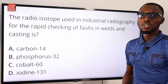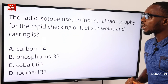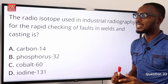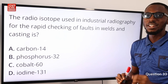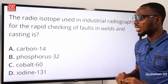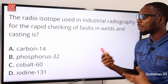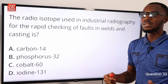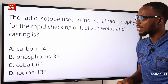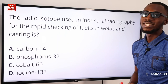Question 33. The radioisotope used in industrial radiography for the rapid checking of defects in welds and castings is Cobalt-60, option C. Aside from that, Cobalt-60 is also used in medicine for radiation therapy to treat cancer, and in food irradiation for sterilization. Option C is correct.